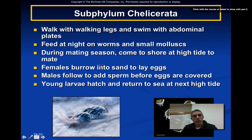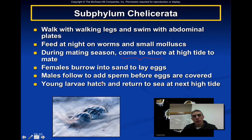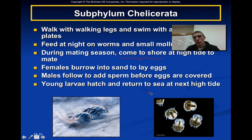Horseshoe crabs feed at night on worms and small mollusks. During mating season, they come to shore at high tide — the male attaches to the female. As the female digs a burrow in the sand to lay her eggs, the male adds sperm before she covers the eggs. When the young hatch, they return to the sea at the next high tide. The larvae are very similar to adults, the only major difference being they lack the characteristic telson or tail found on the adult.